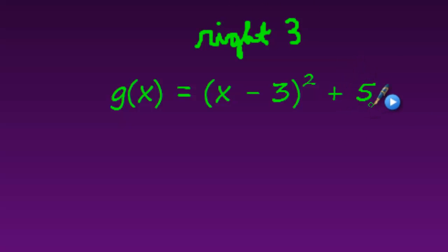And then this number outside here is the vertical shift, up or down. And this number will be exactly what I see here. So positive is up. So this will be a shift up 5.